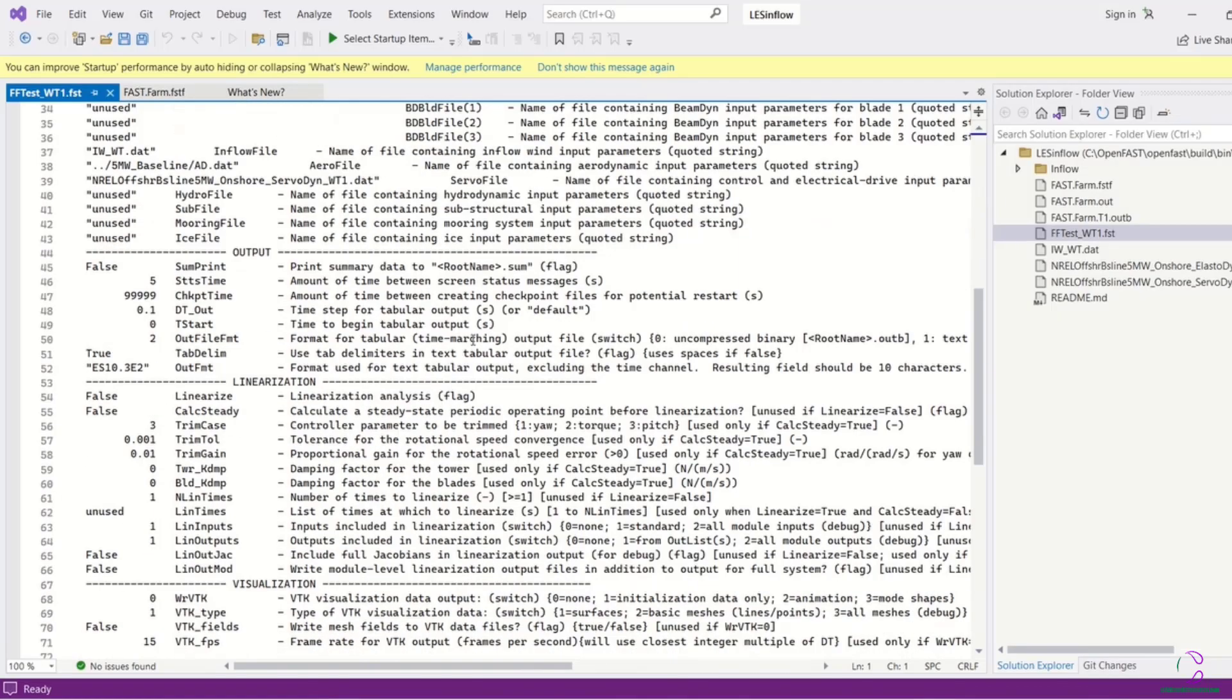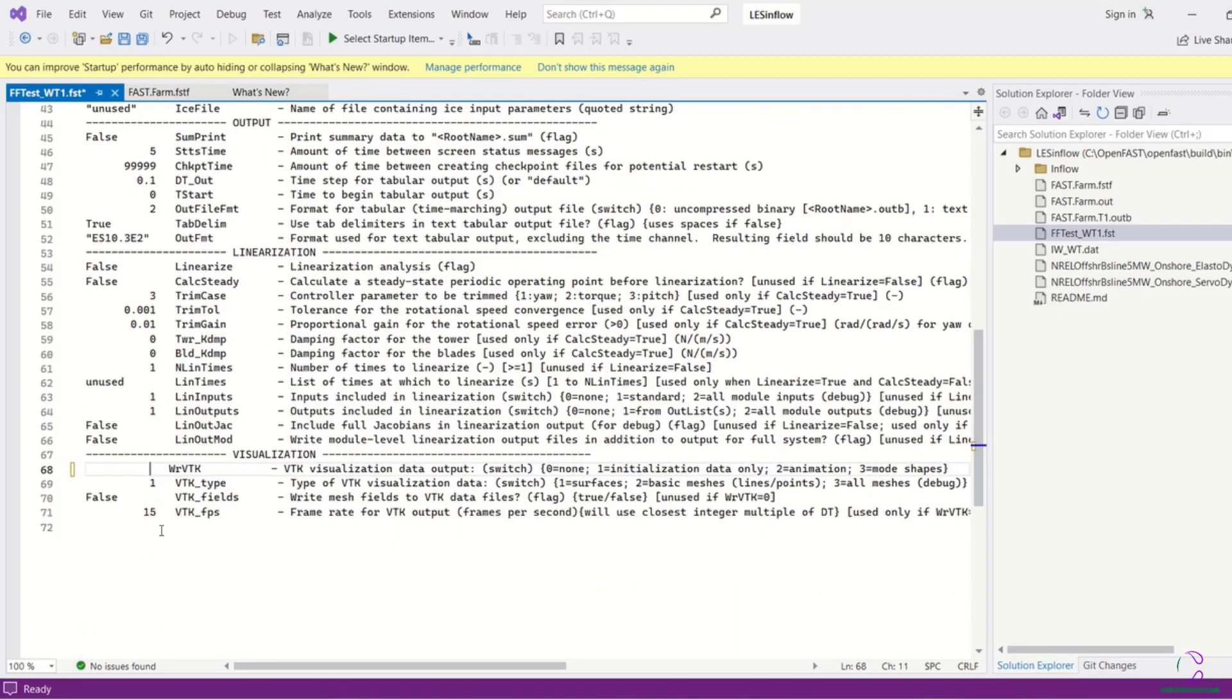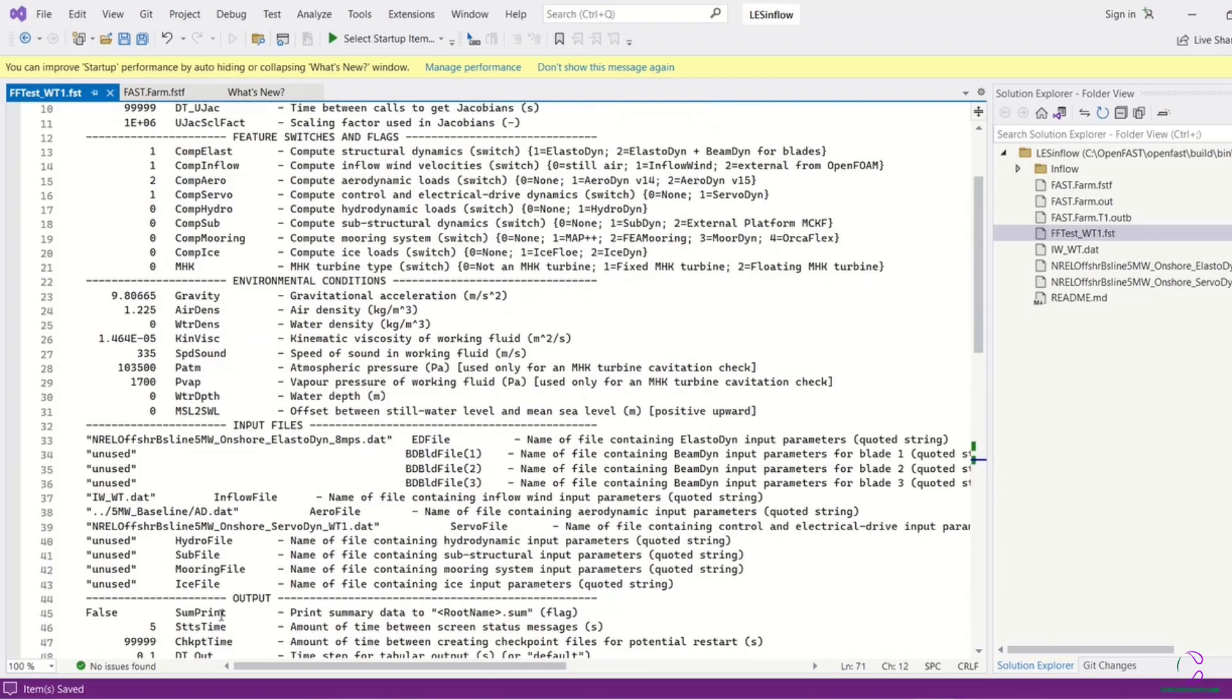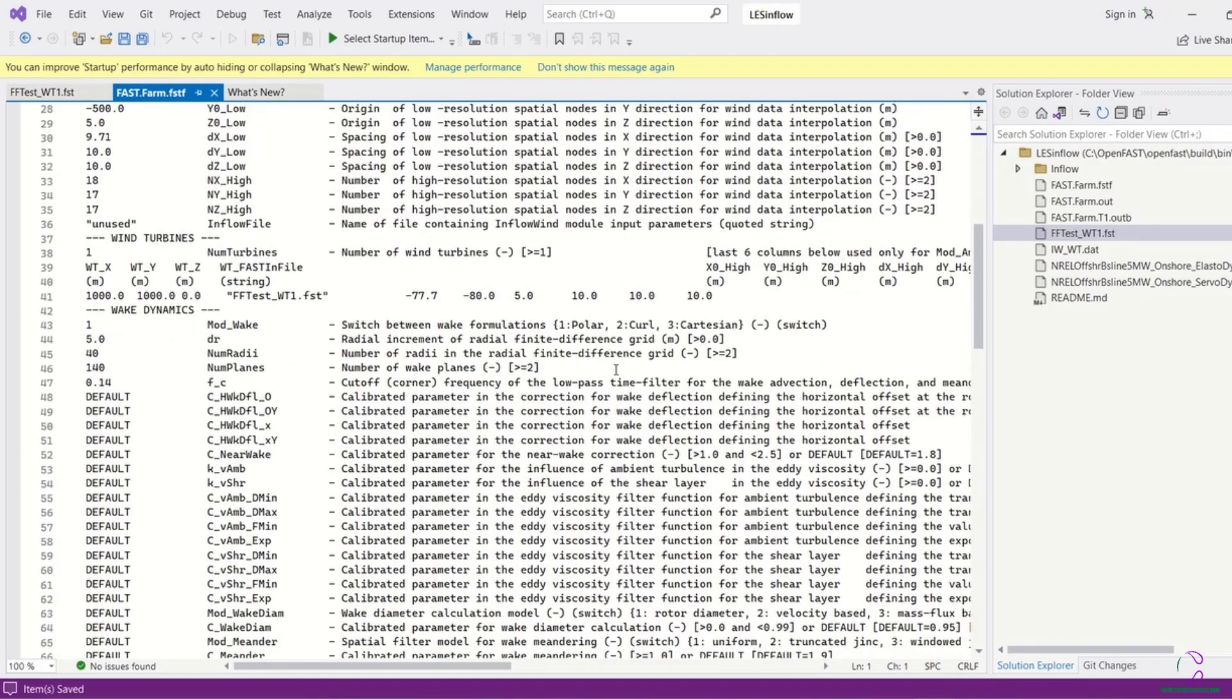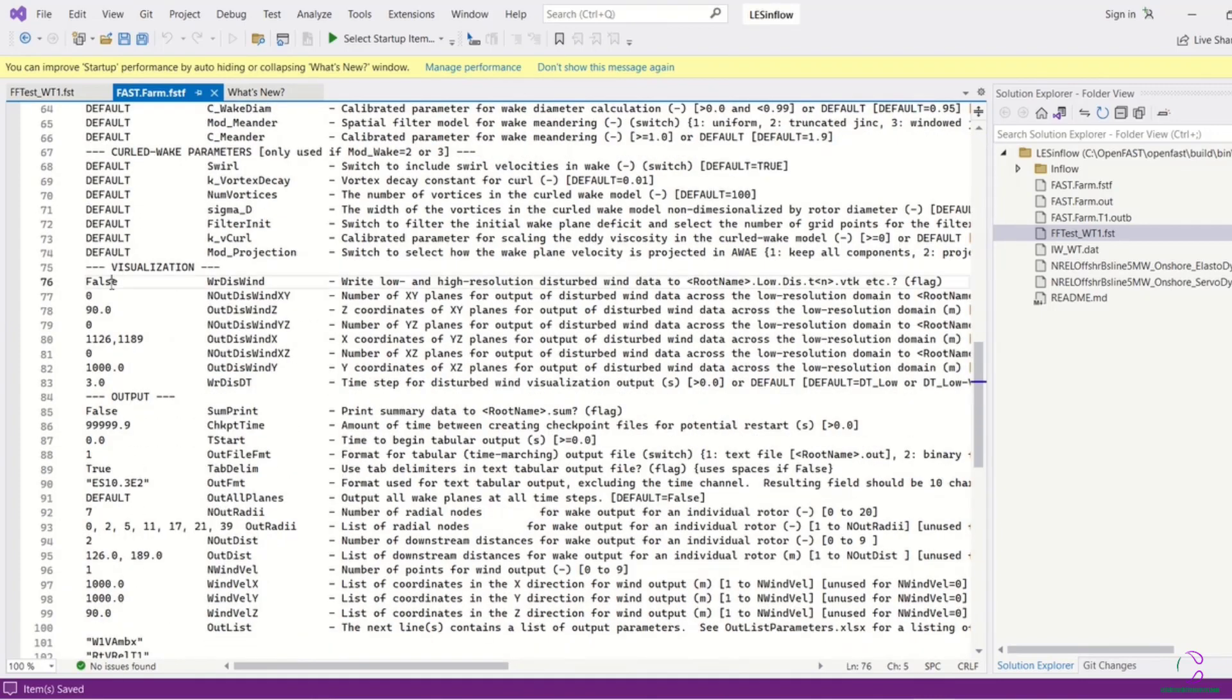So this is for the wind turbine. We've selected the visualization. Then we come to .fstf file. We are going to select the ambient wind to be either one or two whatever we are looking at. Then we select visualization to be true. In this case, we just want to see an XY plane of the wind behavior around the wind turbine.